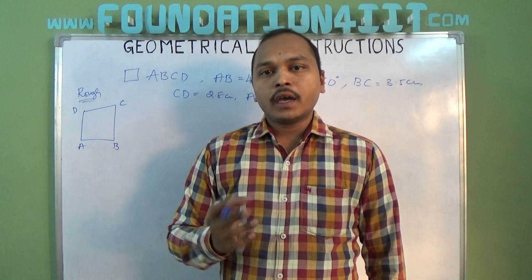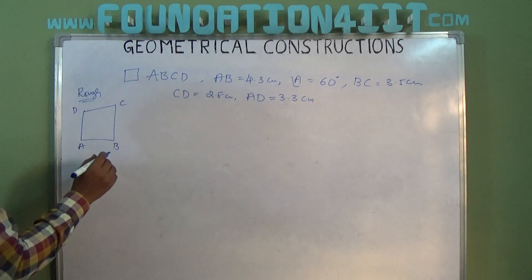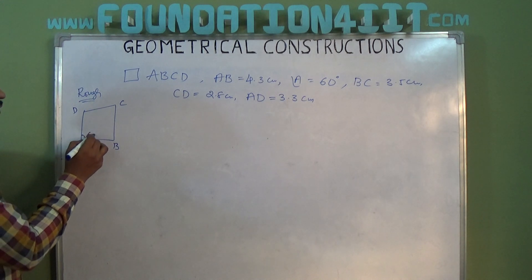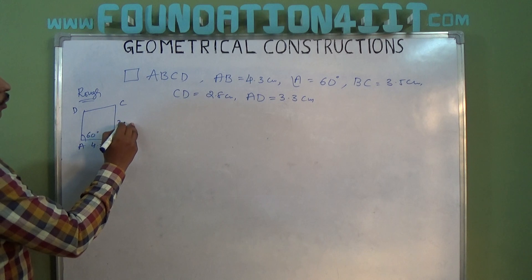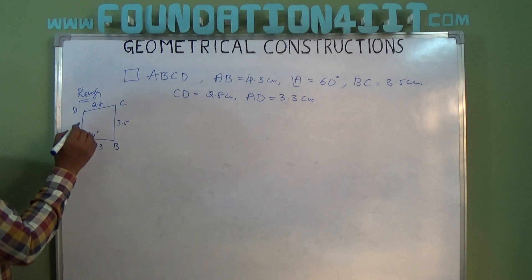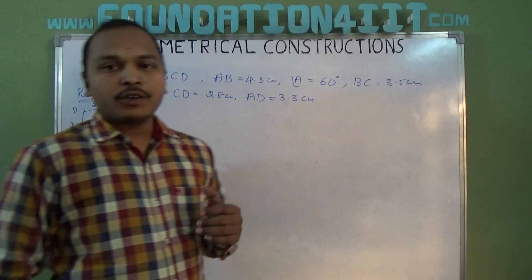In this rough diagram: AB equals 4.3, angle A equals 60 degrees, BC equals 3.5, CD equals 2.8, and AD equals 3.3. This is the given data. We need to construct the quadrilateral.